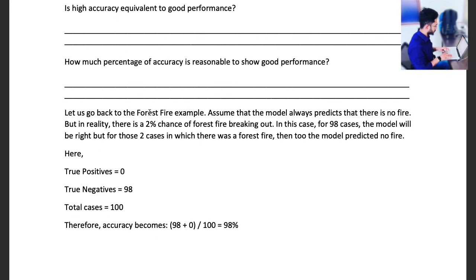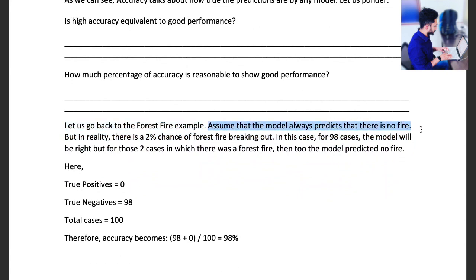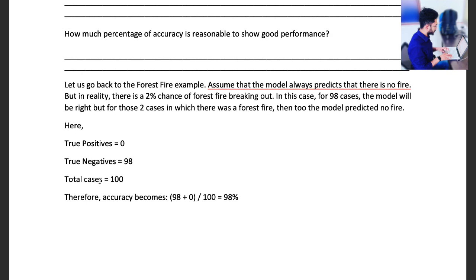Let us understand this with the forest fire example we studied earlier. Assume that the model always predicts that there is no fire. In reality, there is a 2% chance of forest fire breaking out. So there are 100 total cases.